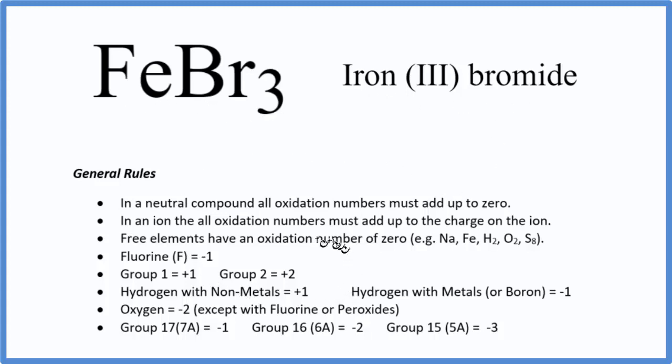We'll use these rules here, and the first rule is that if we have a neutral compound, all the oxidation numbers are going to add up to zero. This is a neutral compound. There's no plus or minus after it. So all the oxidation numbers for each of the atoms here, they'll add up to zero.